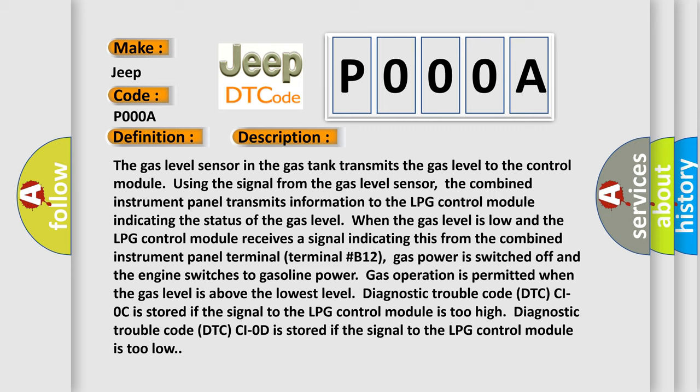Gas power is switched off and the engine switches to gasoline power. Gas operation is permitted when the gas level is above the lowest level.